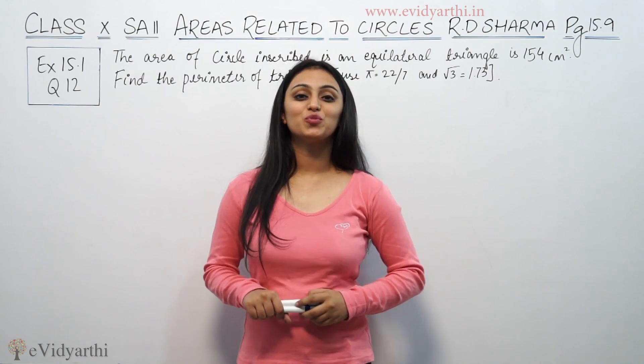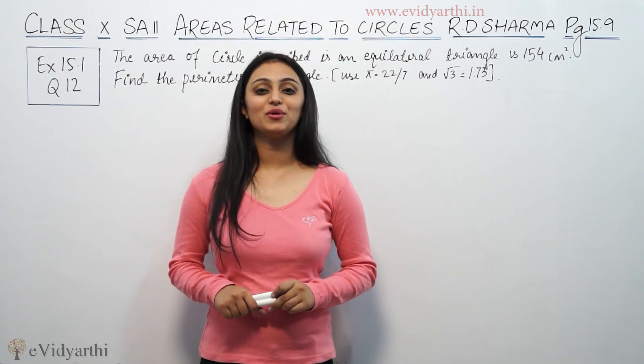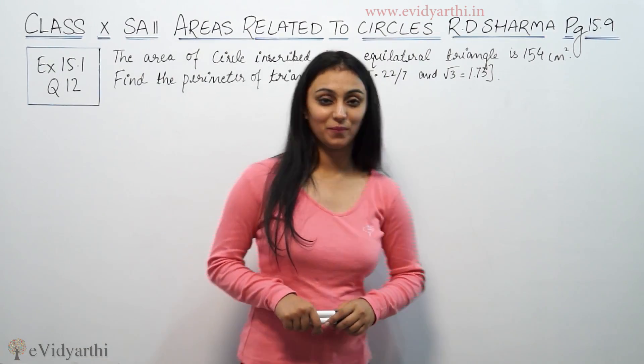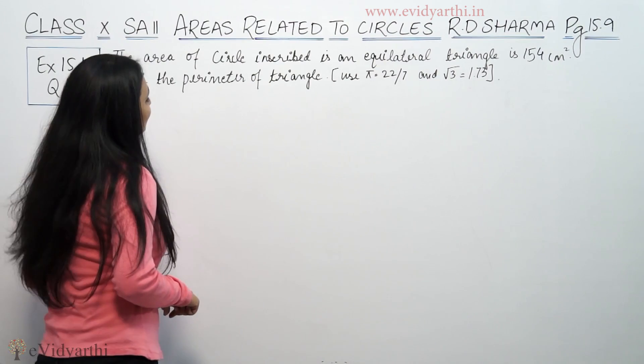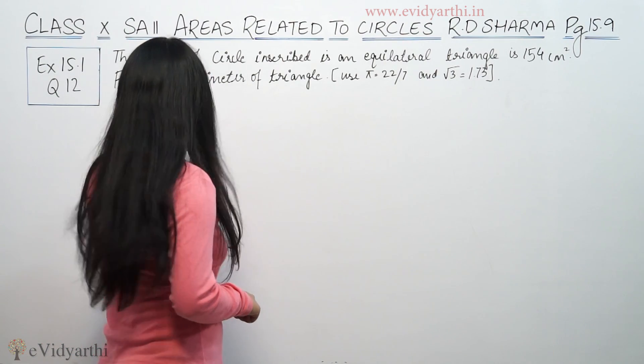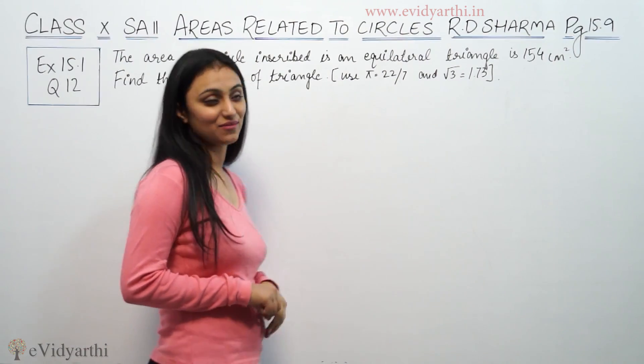Hey, welcome to a video. This is Khush Phu with another question of area related to circles. This is question number 12 from exercise 15.1, page 15.9 from RD Sharma. The area of a circle inscribed in an equilateral triangle is 154 cm². Find the perimeter of the triangle. If pi is 22/7 and root 3 is 1.73.